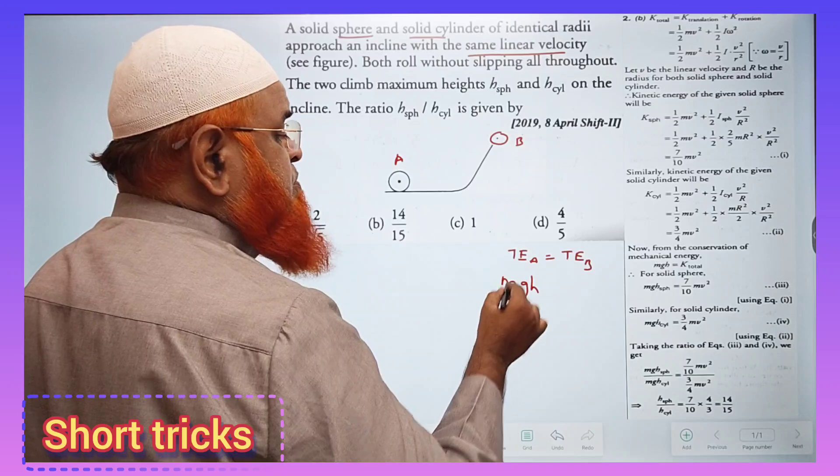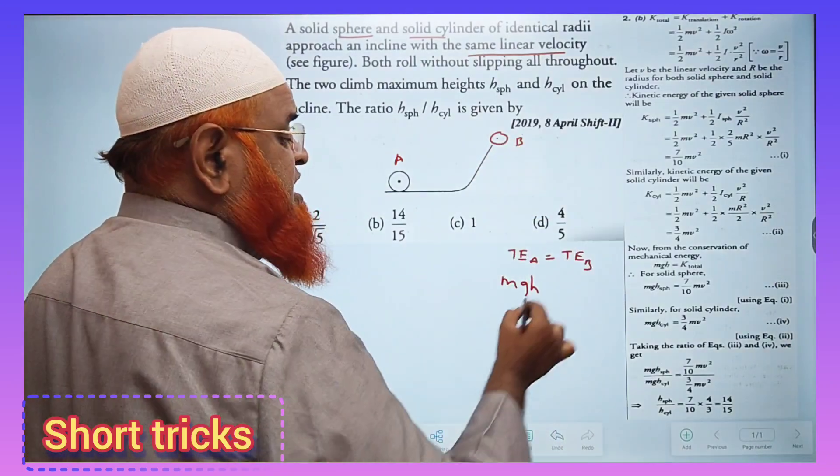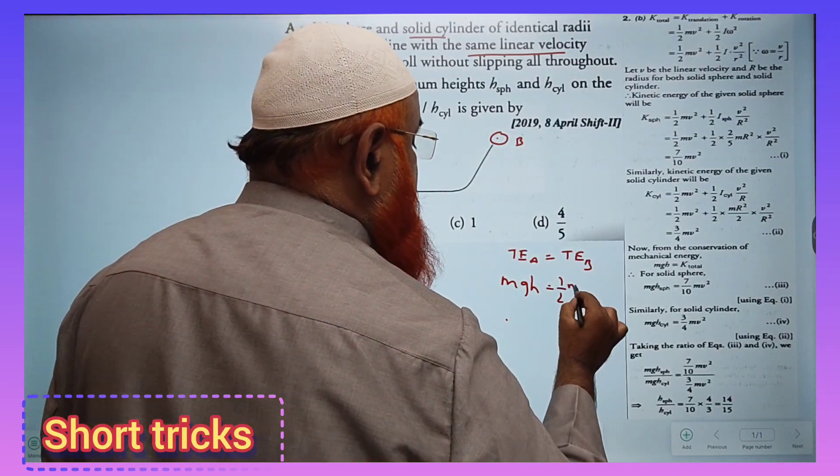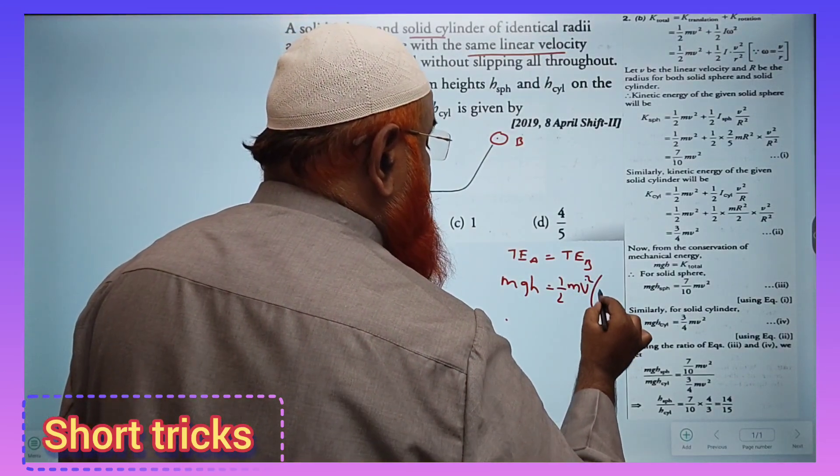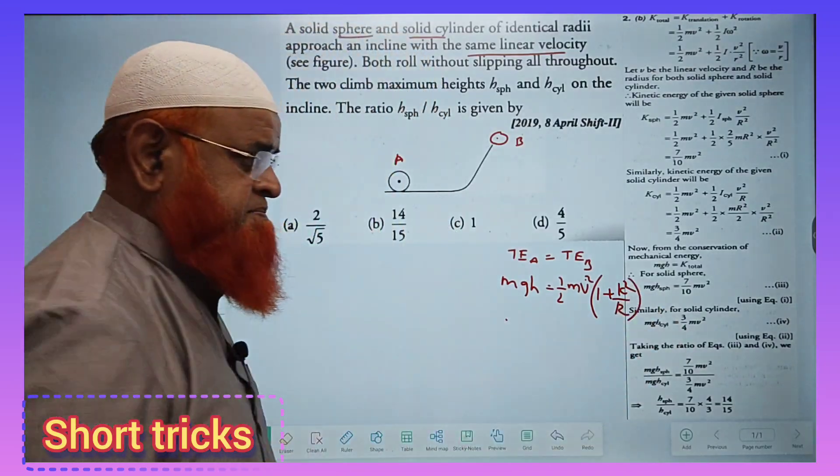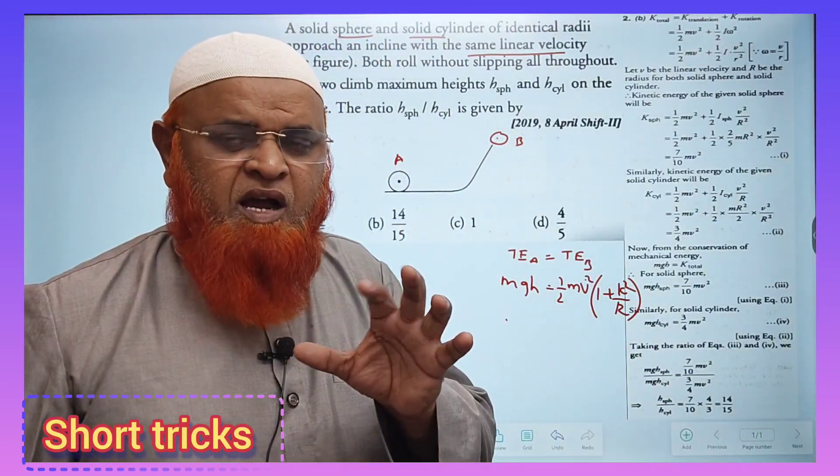Potential energy at B can be taken as MGH, and kinetic energy at A can be taken as ½MV²(1 + K²/R²). Use this formula to reduce your workload.